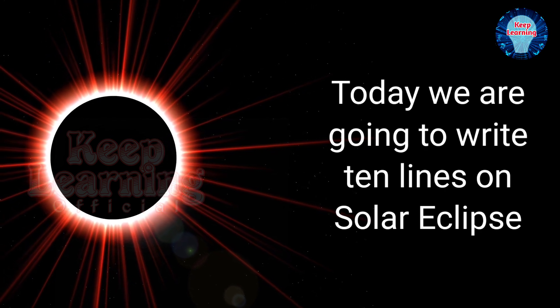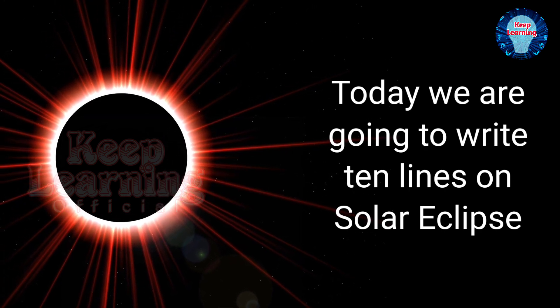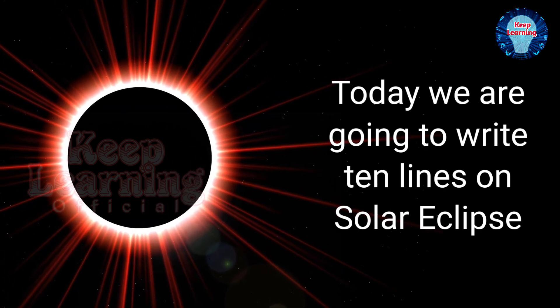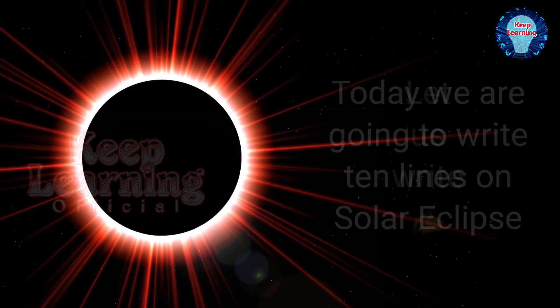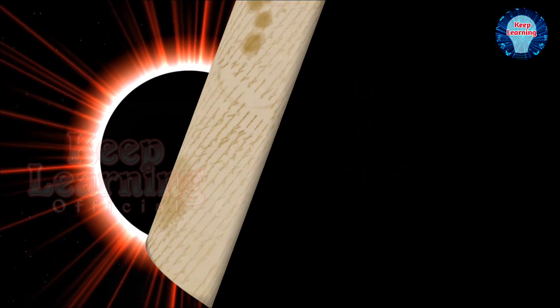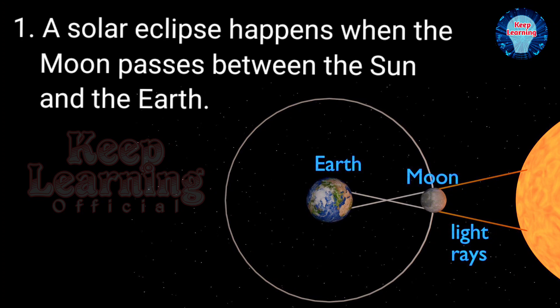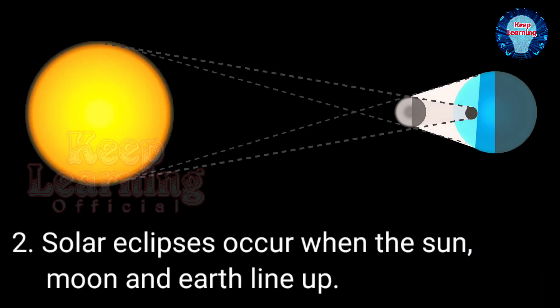Today we are going to write 10 Lines on Solar Eclipse. A solar eclipse happens when the moon passes between the sun and the earth. Solar eclipses occur when the sun, moon and earth line up.